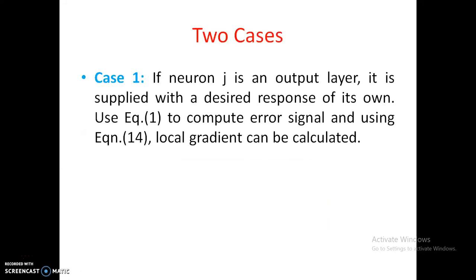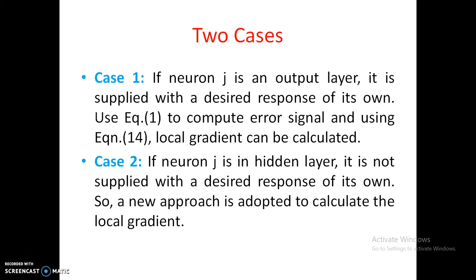There are two cases. Case 1: if the jth neuron is in the output layer, it is supplied with a desired response, so we use equation 1 to compute the error signal and equation 14 for the local gradient computation. Case 2: if the jth neuron is in the hidden layer, no desired response is supplied, so a new approach — extended backpropagation — must be adopted, which will be explained in the next video.